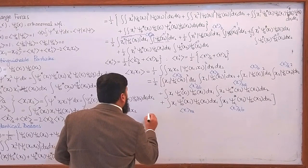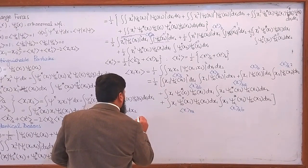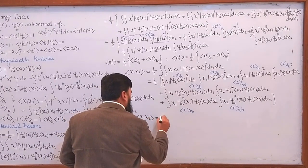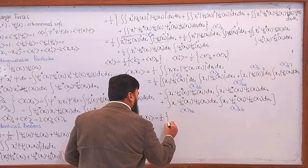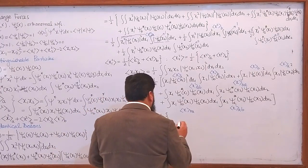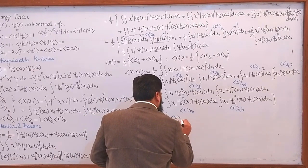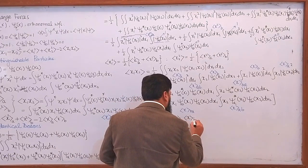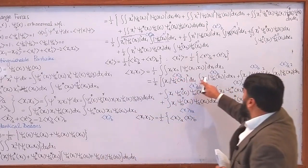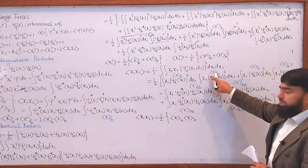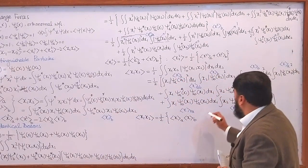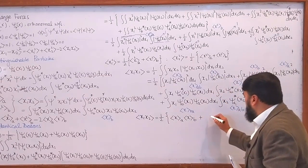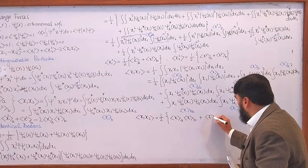And we will have: this is the x1, x2 expectation value equal to — xa multiplied with xb, xa multiplied with xb, then plus xb multiplied with xb.